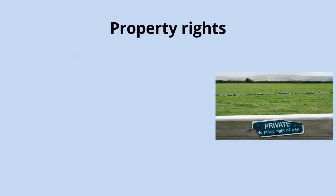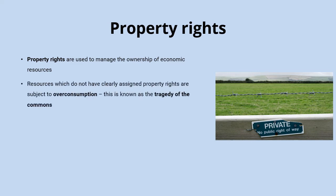Property rights are quite simply about allocating who owns what, and so they're used to manage the ownership of economic resources. This is really crucial in ensuring that these resources are allocated in the most efficient way, because without property rights you'd be very likely to get the problem of the tragedy of the commons, which is where resources without clearly assigned property rights get over-consumed.